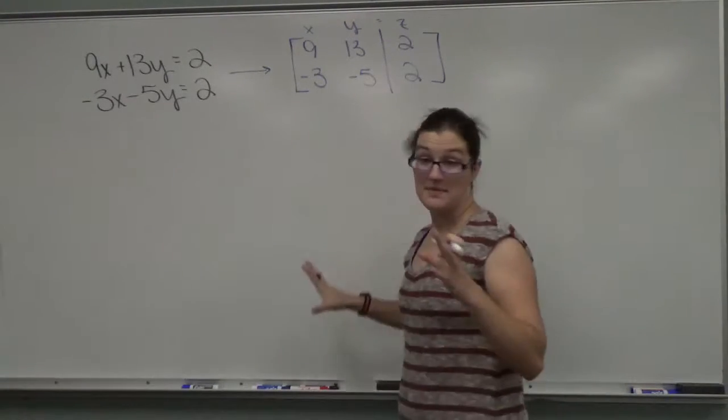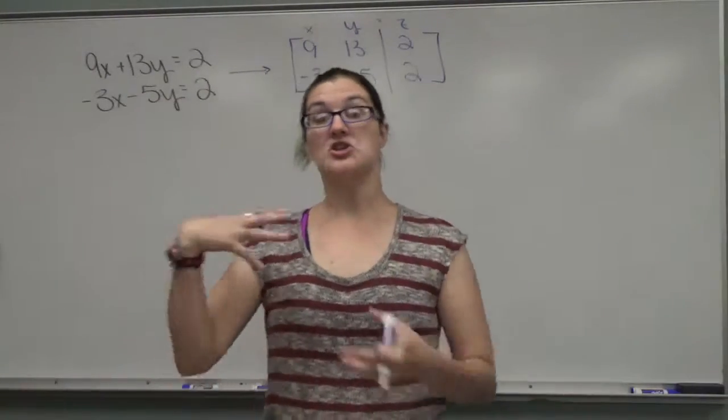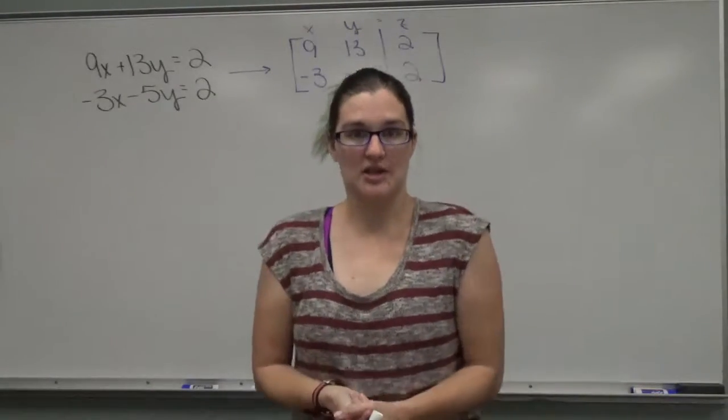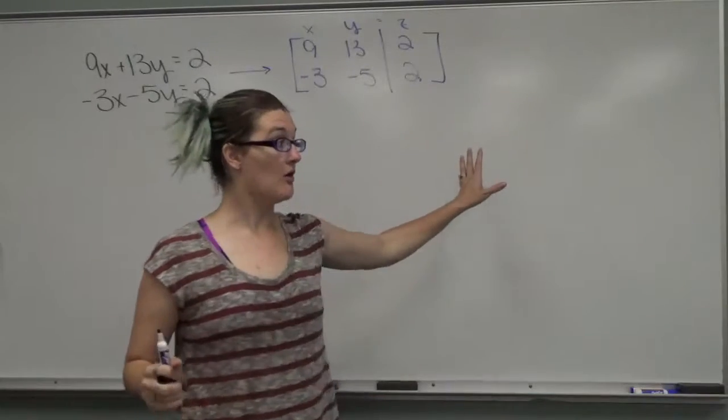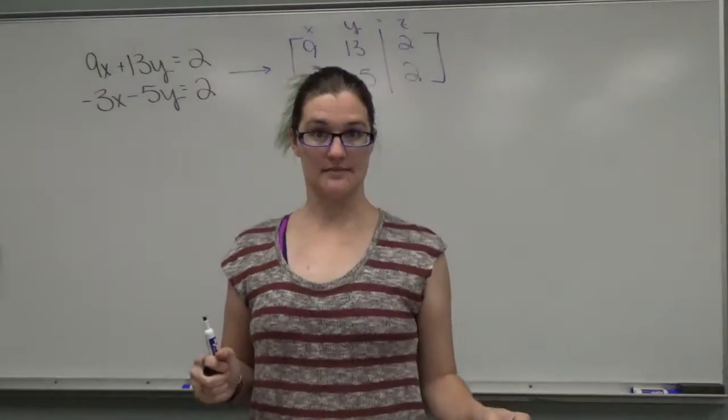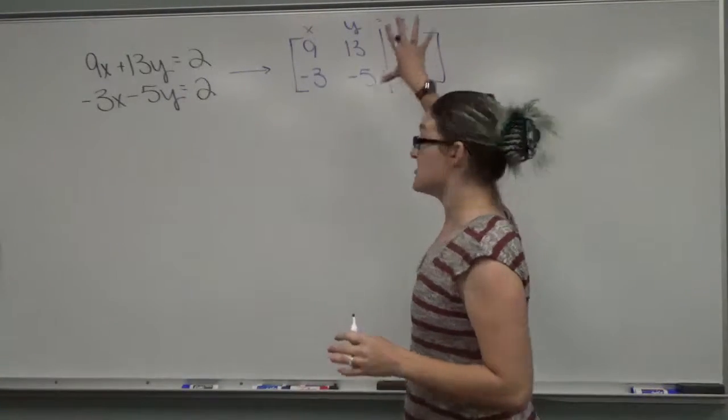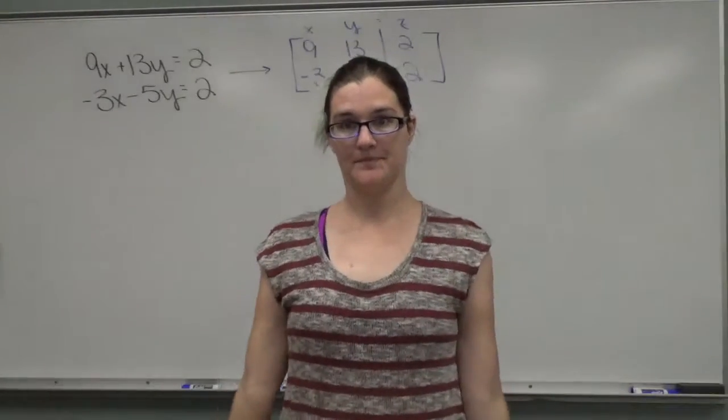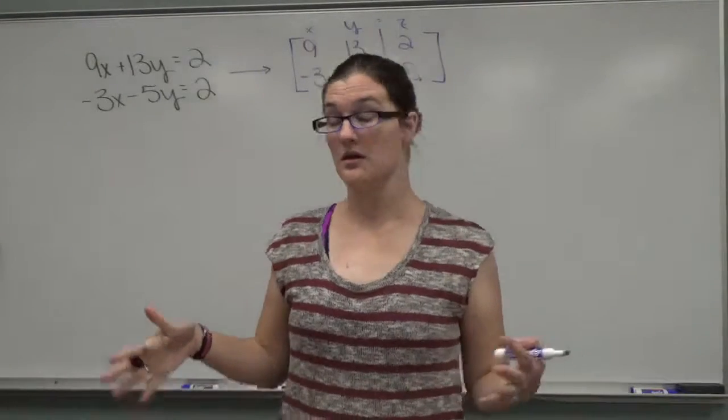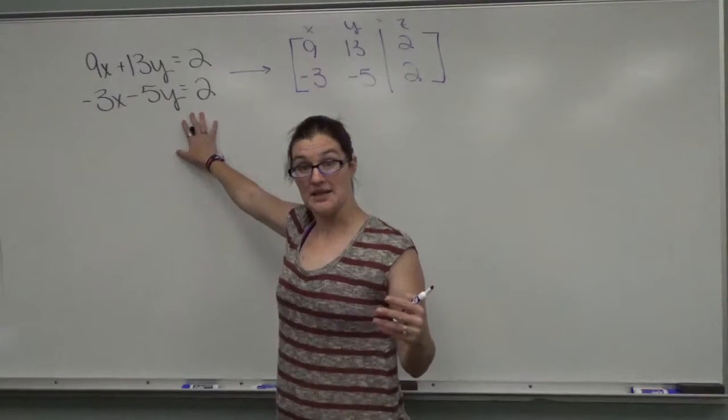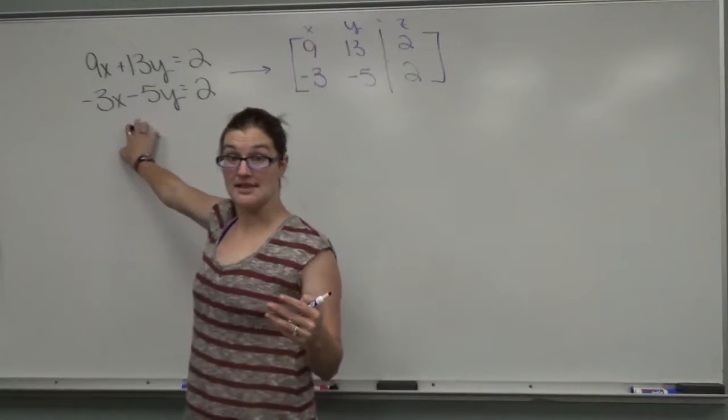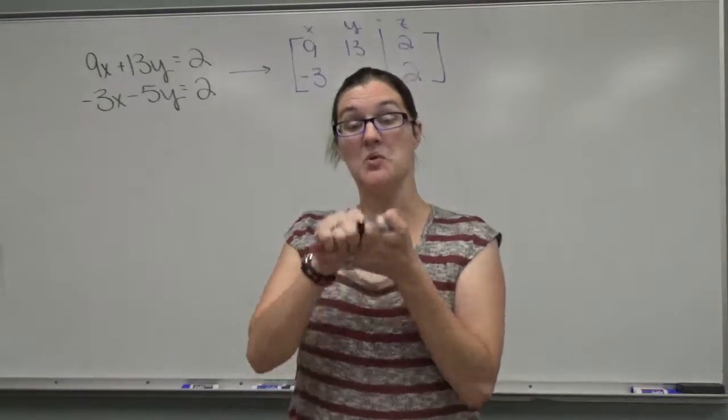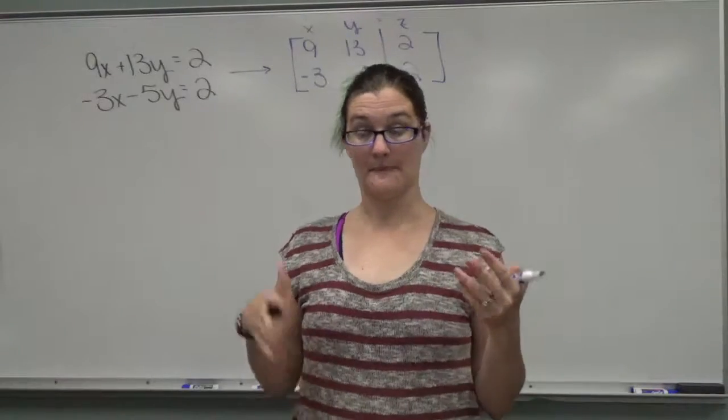So we have this matrix. What I'm going to do is do a step at a time and show you how it's the same with the equations as it is with the matrices. The first thing we're allowed to do with the matrix is we're allowed to multiply any row by a non-zero constant. So that means I can take either one of these rows, row one or row two, and multiply by any number other than zero. You cannot multiply it by zero because that would get rid of the whole thing. And what it is, is it's from the elimination method.